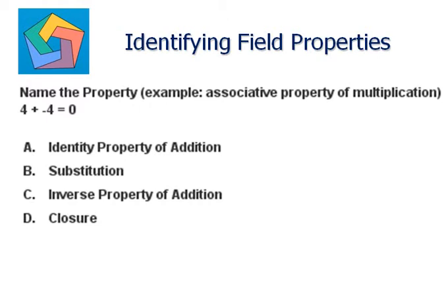4 plus negative 4 is equal to 0. A: identity property of addition. B: substitution. C: inverse property of addition. D: closure.